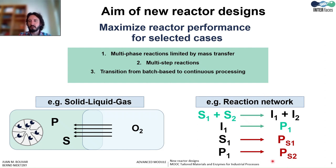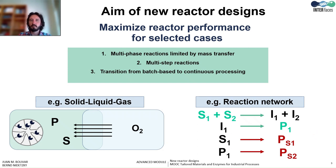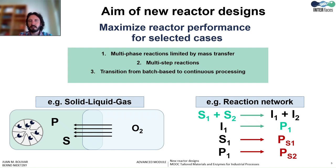The second example illustrated here is a reaction network. In this case, it is interesting to produce a certain product where different reactions in series or in parallel are involved, and it is interesting to have solutions where, at the catalyst level or at the reactor level, these reactions and the catalysts can be assembled together.